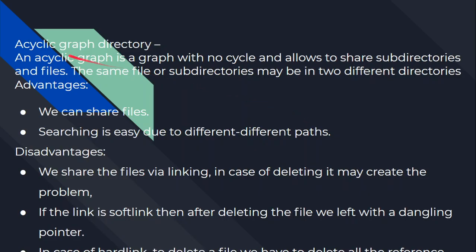An acyclic graph is a graph with no cycle, and it allows sharing of subdirectories and files. The same file or subdirectory may appear in two different directories. The advantage is that you can share files and searching is easy due to the different paths. The disadvantage is that we share files via linking, and in case of deleting, it may create a problem.